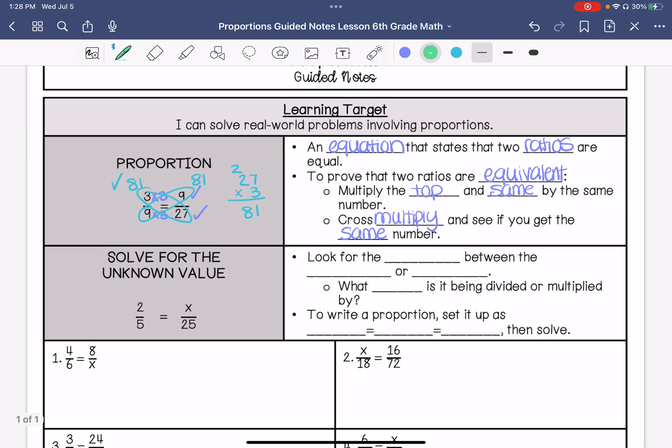To solve an unknown value in a proportion, you are going to look for the relationship between the numerator or the denominators.